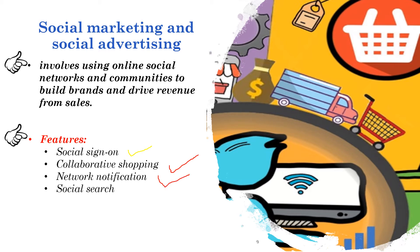We also have network notification, creating an environment where consumers can share their approval or disapproval of products, services, and content, or share their geolocation — perhaps a restaurant or club — with friends. The Facebook like button and Twitter tweets and followers are examples of this.